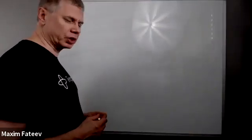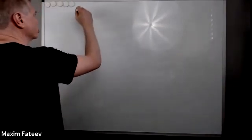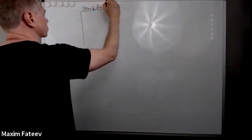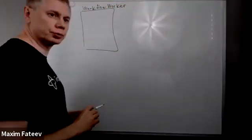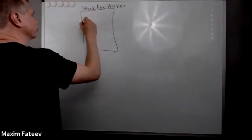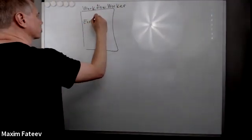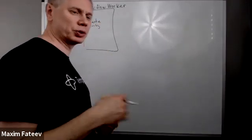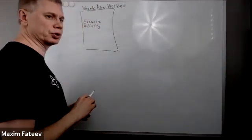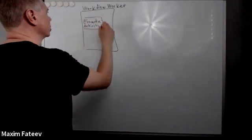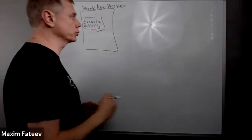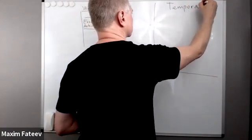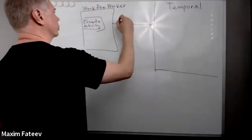Let's start from the invocation. Usually in Temporal you have a workflow worker which hosts workflow code, and somewhere in your workflow it will have an execute activity statement. In Go it will be execute activity; in Java it can look like an invocation of an activity interface, but at the end it will be transformed into a schedule activity command which is sent back to the Temporal server.